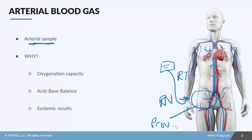We want arterial blood specifically because it gives us completely different results than venous blood. Your blood flows out of your heart, into your lungs to pick up oxygen, and then out through the arteries into the rest of your body. So the blood in the arteries is fully oxygenated, telling you the full oxygen capacity of the patient. If we get venous blood, a lot of that oxygen has already been dropped off in the tissues.